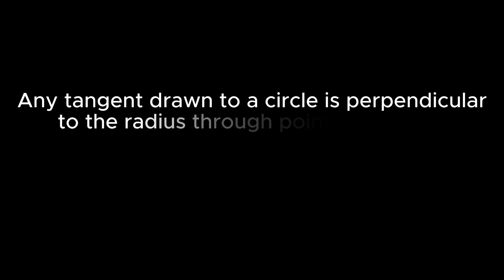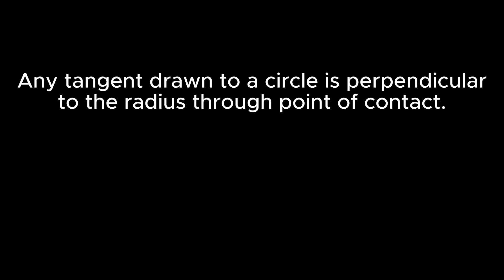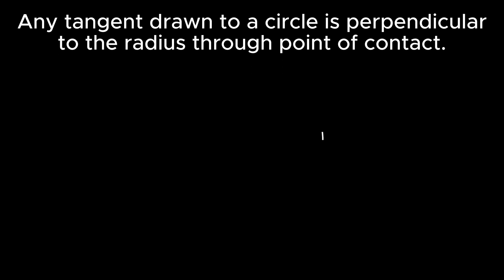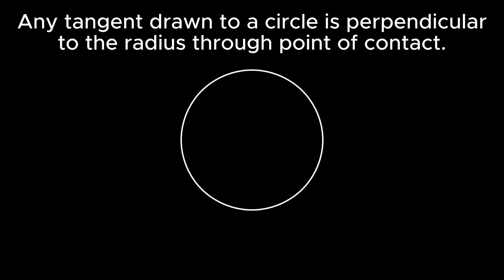Theorem 1 states that any tangent drawn to a circle is perpendicular to the radius through the point of contact. To prove this, consider a circle with center O. Let AB be the tangent to the circle touching at point P. Now join point O to point P.